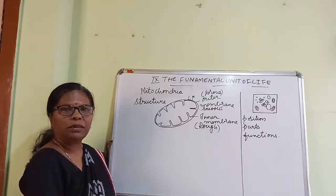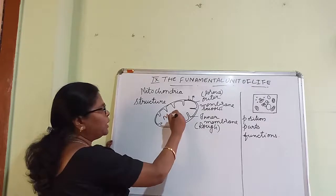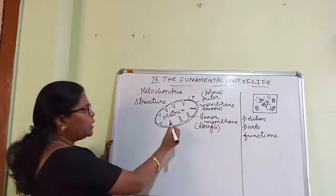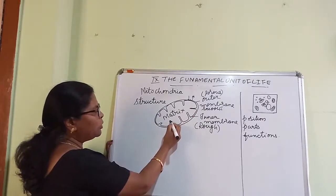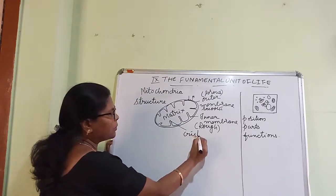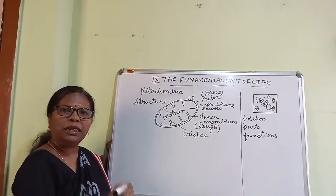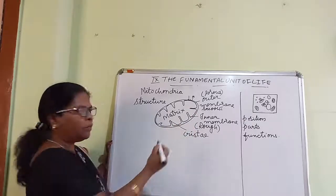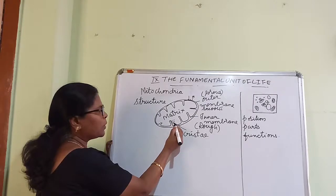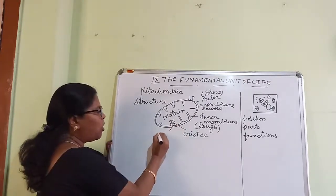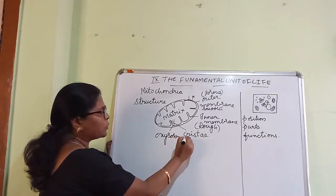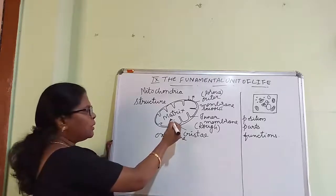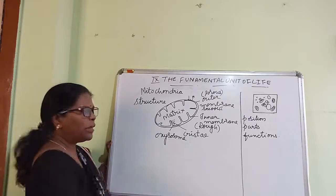The inner part of the mitochondria contains some fluid material and that we call the matrix. The foldings present in the inner membrane, we call those foldings as cristae. Each cristae possesses some important structures, and in the space from one cristae to another, there are structures we call oxysomes.